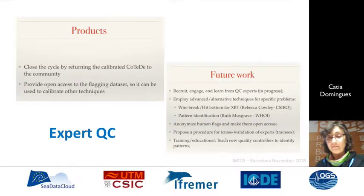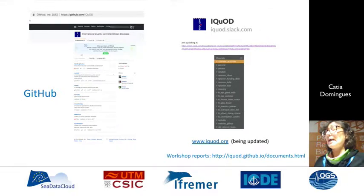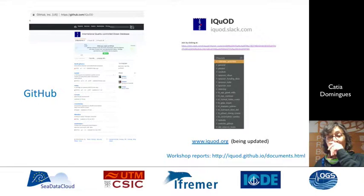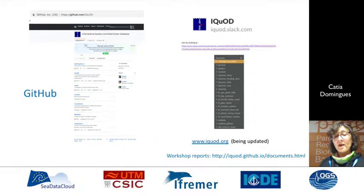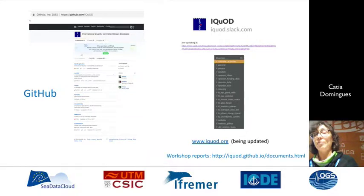If you want any details, or if you want to join activities in machine learning or contribute regional expertise, please come and talk to us. Everything we are doing is documented on GitHub — you have all the data sets, software tools and code there. The team is working mostly in Python. We use Slack to communicate between each other, since we are distributed everywhere. Our web page is being revamped, but on the GitHub page you can also find our workshop reports if you are interested in learning more detail.